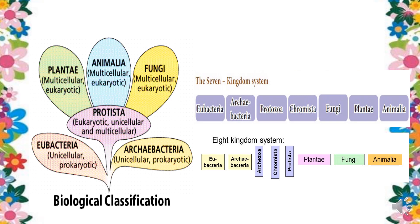It was Cavalier-Smith in 1987 who revised the six kingdom system to a seven kingdom system, introducing the concept of super kingdoms. The six kingdom classification is divided into two super kingdoms: Prokaryota and Eukaryota. The seven kingdoms include two prokaryotic kingdoms and five eukaryotic kingdoms — Protozoa, Chromista, Fungi, Plantae, and Animalia. This was later revised to an eight kingdom system. We will continue with the taxonomic hierarchy in the next video class.